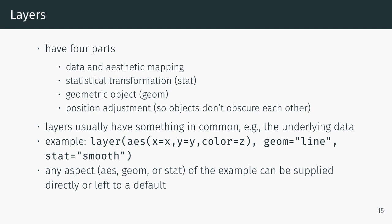Layers have four parts: the data and aesthetic mapping, the statistical transformation or stat, the geometric object or geom, and the position adjustment which is just so objects don't obscure each other.